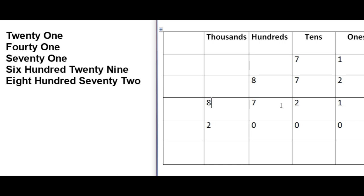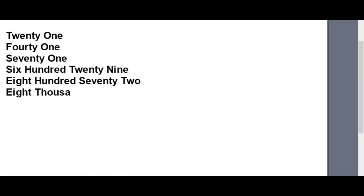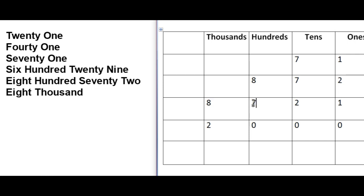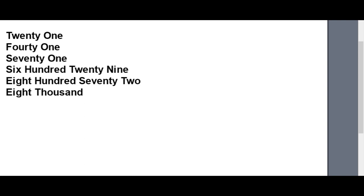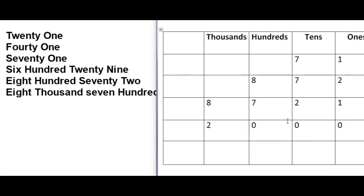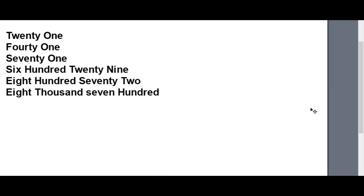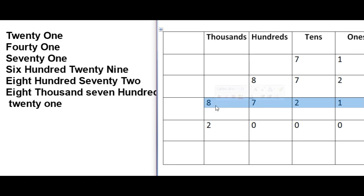Now come to 4-digit numbers. Here 8 is in the place of 1000's, so we call this 8000. 7 is in the place of 100's, so we will write 700. 2 is in the place of 10's, so we will write 20. And 1 is in the place of 1's, we will write normal 1. In this way, we will write this number in words.